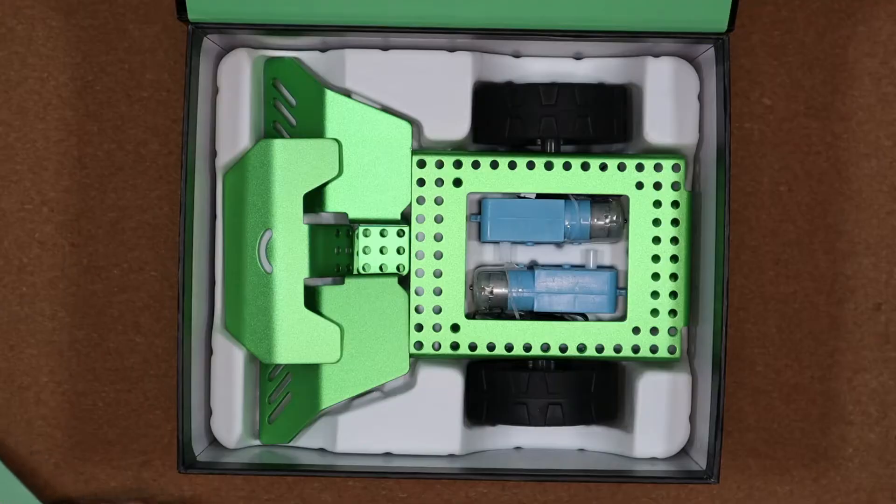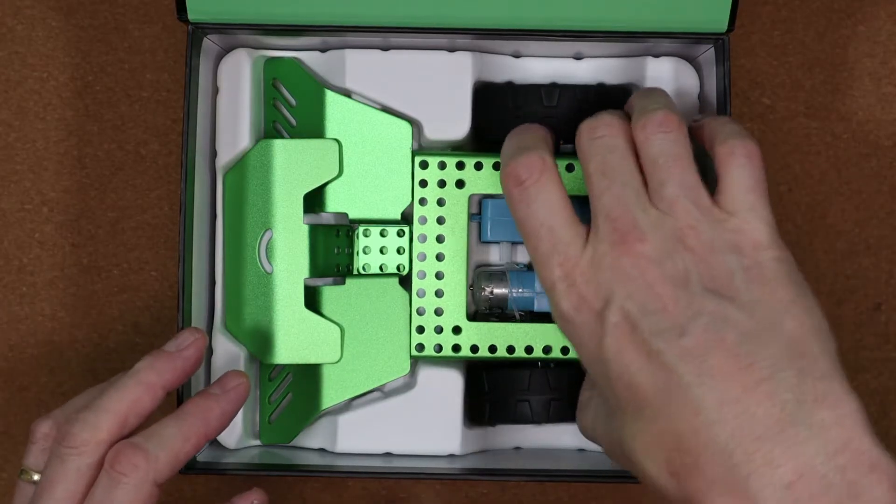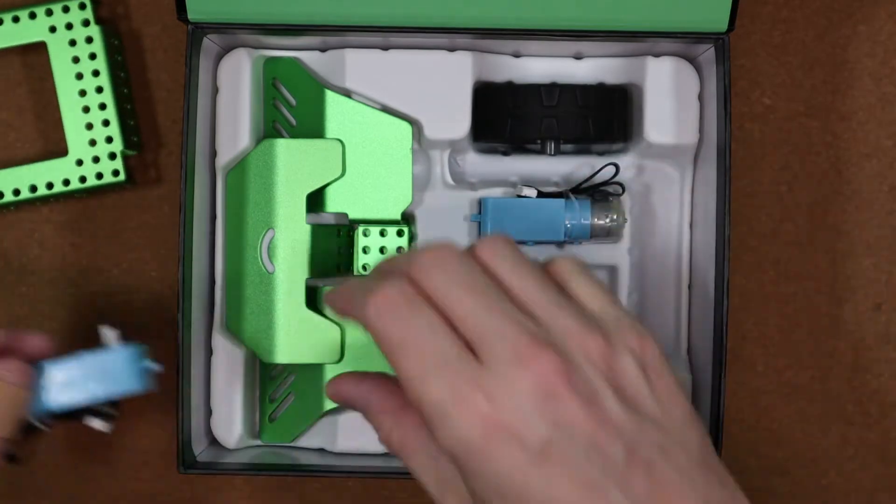In the next level we've got some metal parts as well as the wheels and motors that allow Q-Scout to get from place to place.